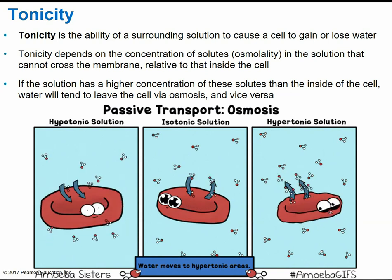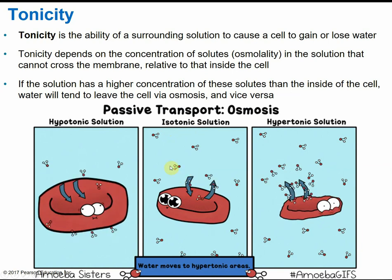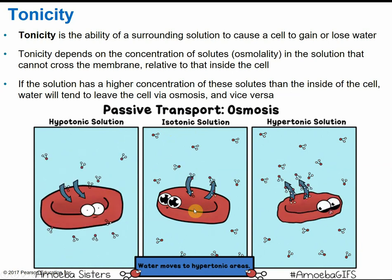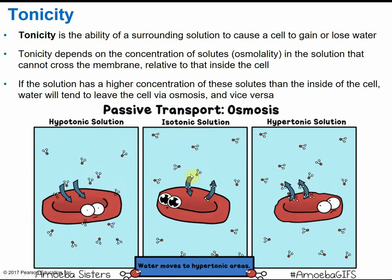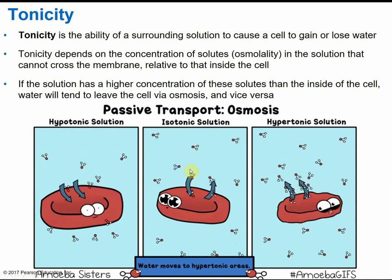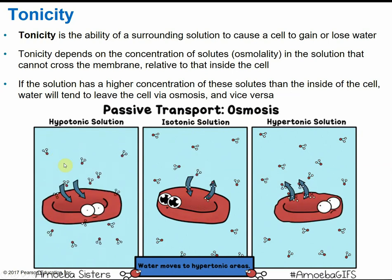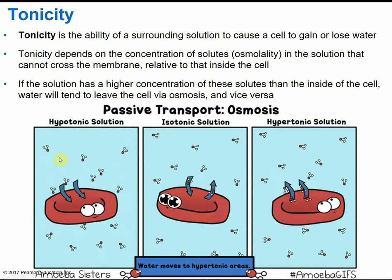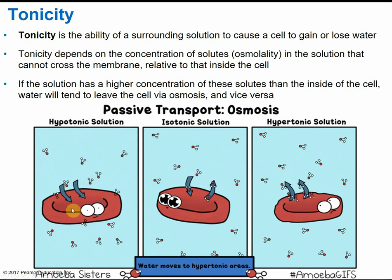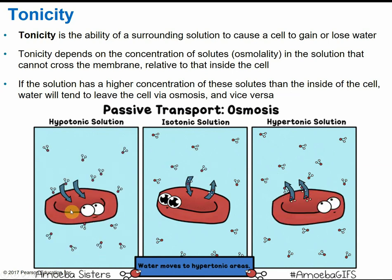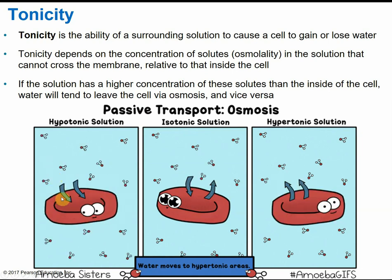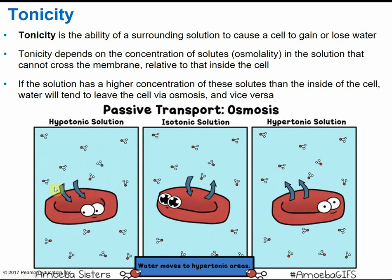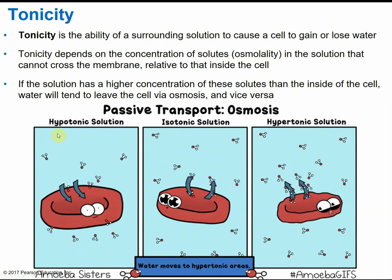There are three types of tonic solutions. Isotonic is where the solution is already at the same concentration as what's inside the cell — naturally at equilibrium, with no net gain or loss of water, and the cell is happy. A hypotonic solution is where the solution is less concentrated or there's more water in the solution than inside the cell. So the inside of the cell is more concentrated, and water will diffuse inside the cell to reach equilibrium and dilute the internal contents.